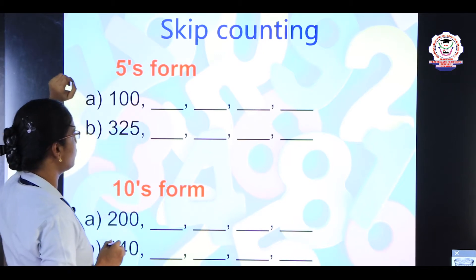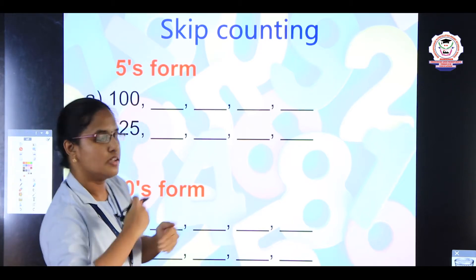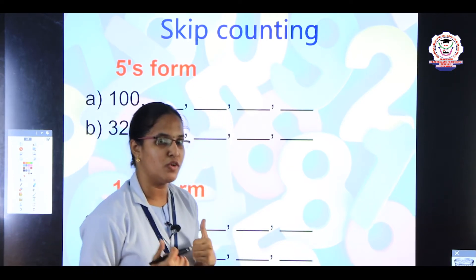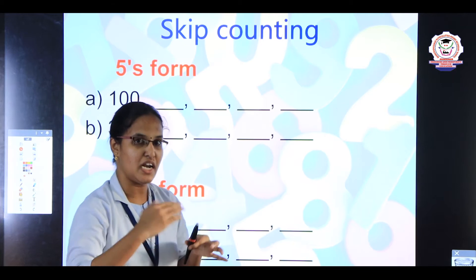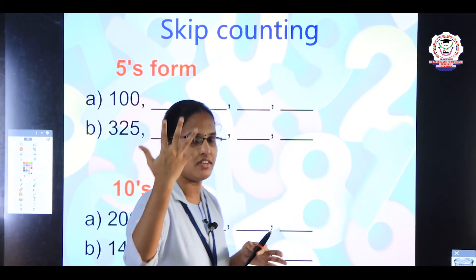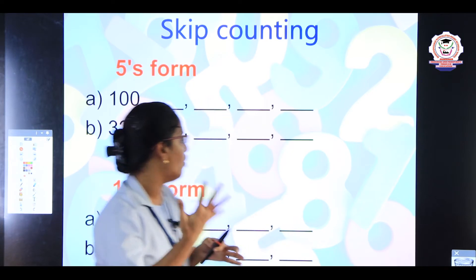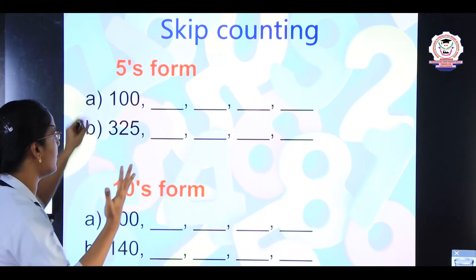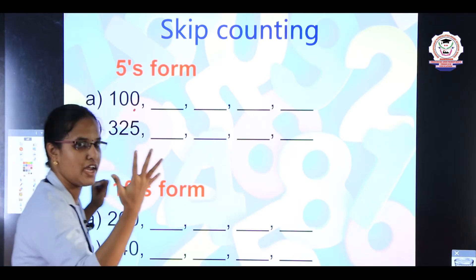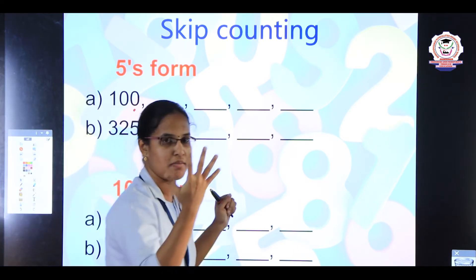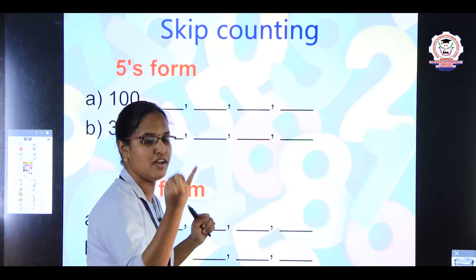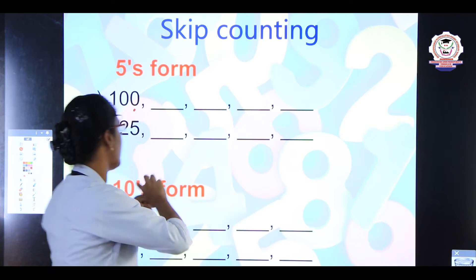In the 5s form we are going to skip count the numbers. To skip count in the 5s form, we want to count the numbers by 5. Everyone take 5 fingers in your hand. Now we want to start counting the numbers from 100. After 100 we want to count 5 numbers. Count along with me: 101, 102, 103, 104, and 105.